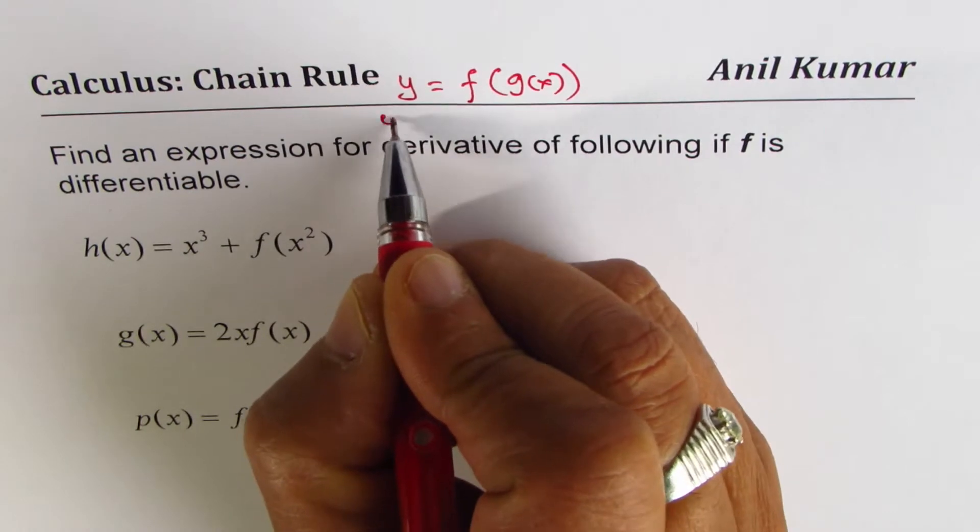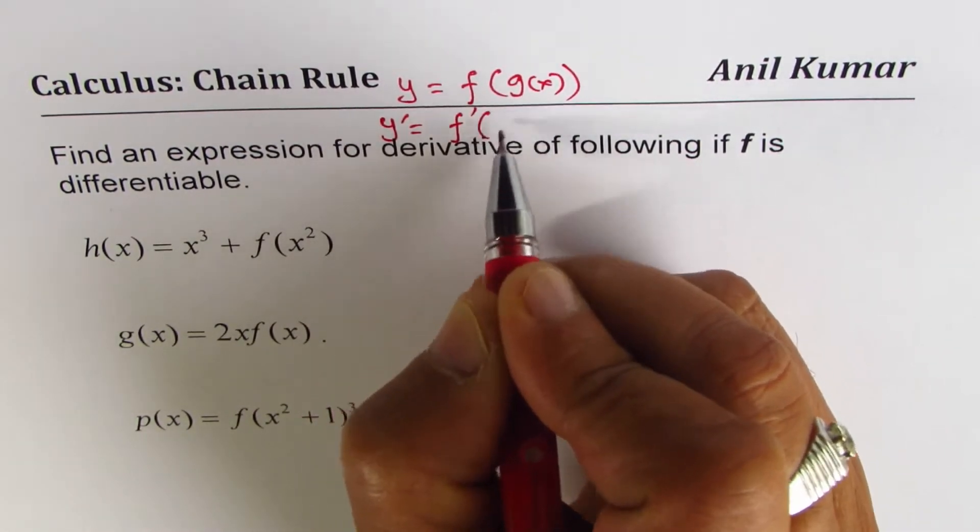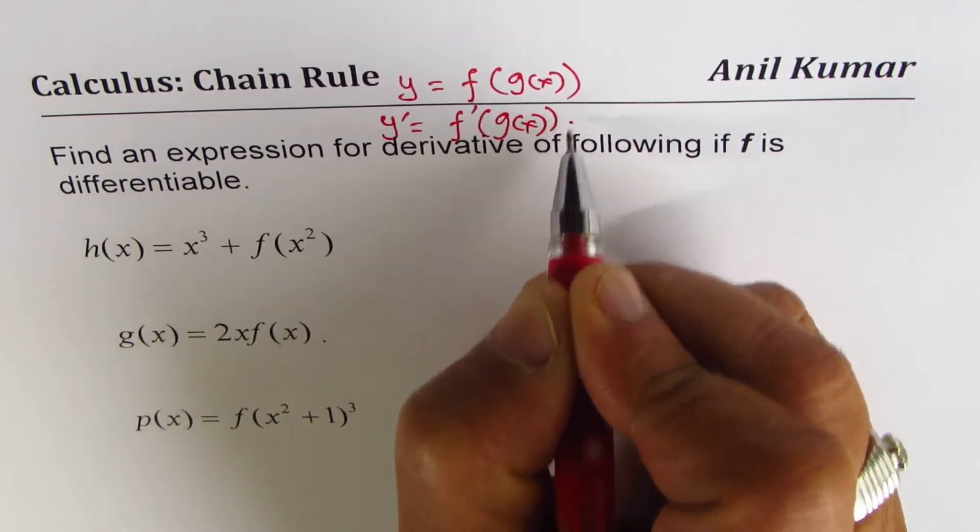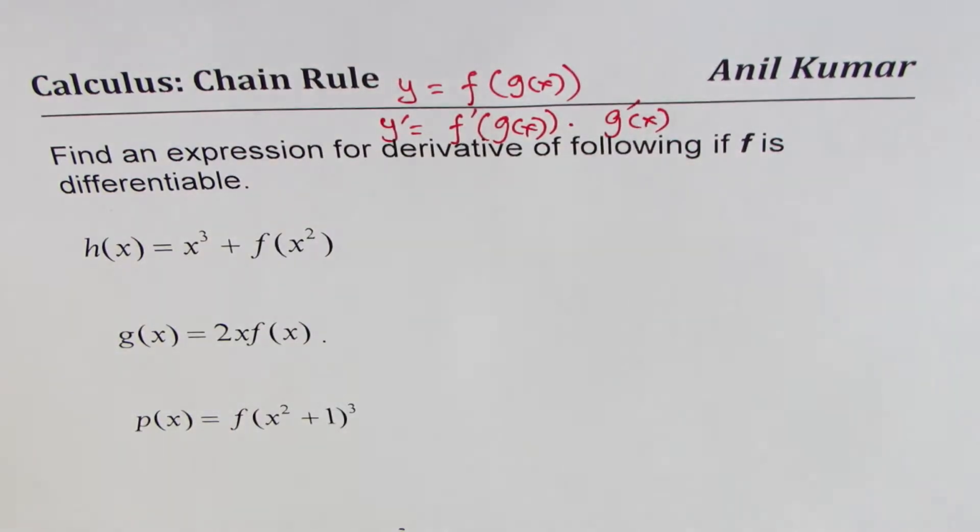in that case, the derivative will be the derivative of the function times the derivative of the inside function. So that's the formula which is going to be applied in this particular example.